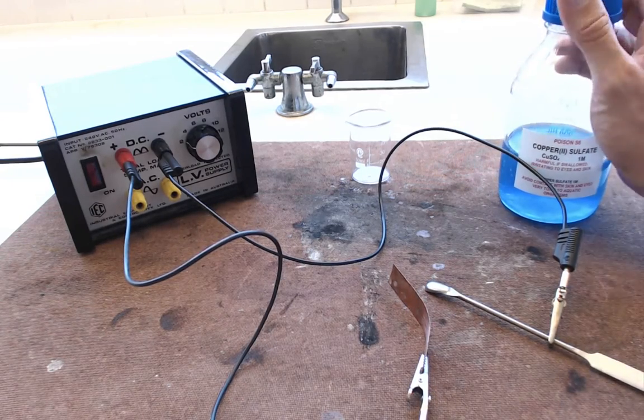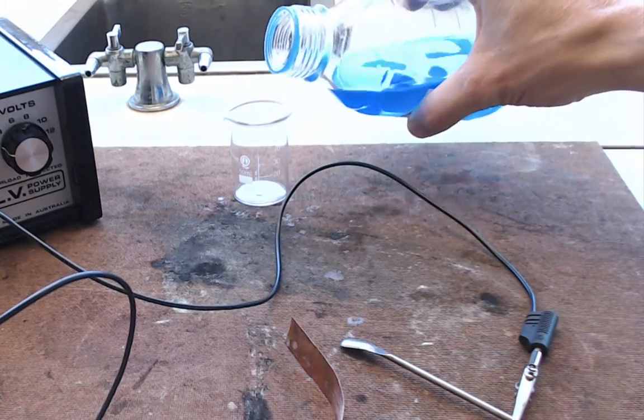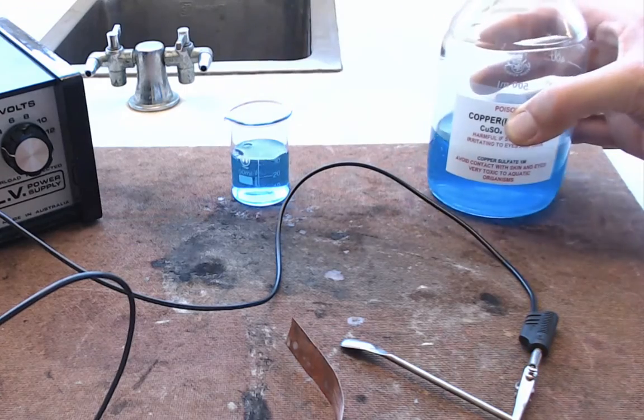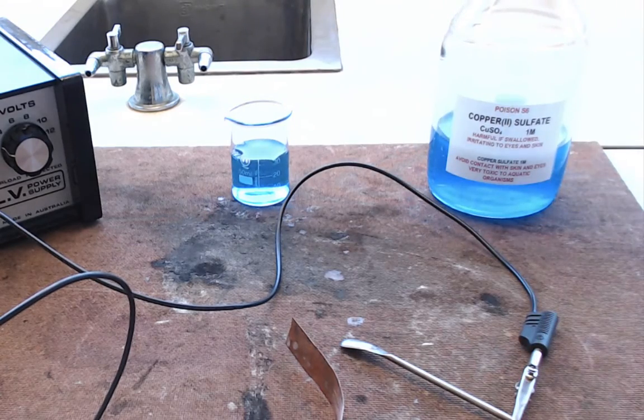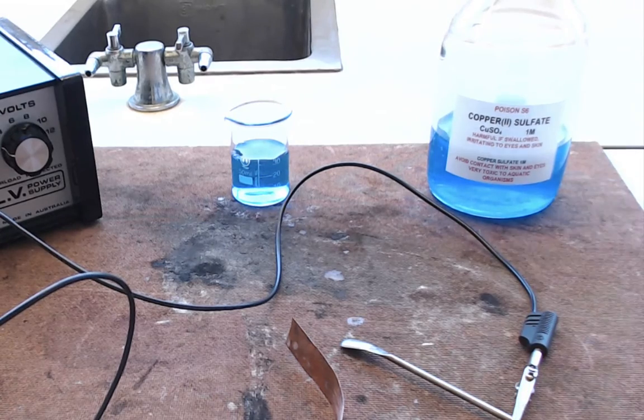Don't need to turn your power pack on yet. You're going to roughly half fill your beaker with copper sulfate. The exact volume is not important, but about half full. Deep enough so that you can submerge your object in it, at least partially.